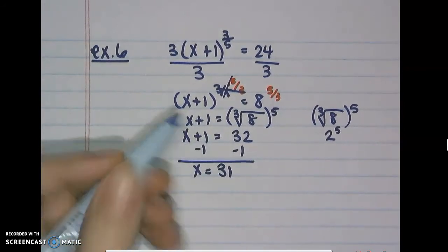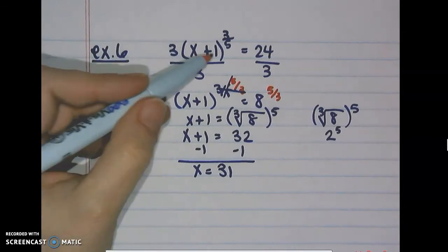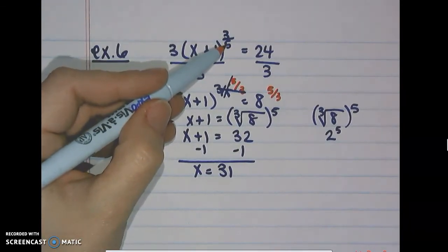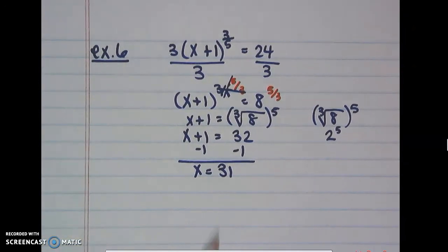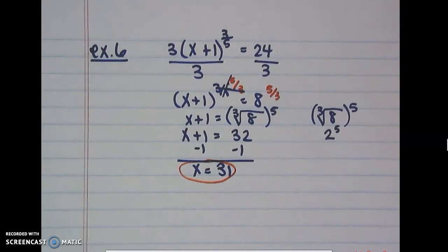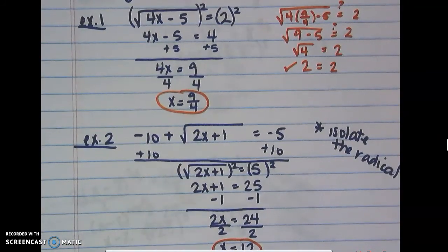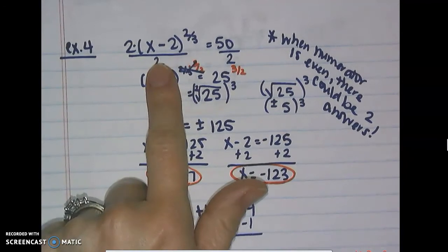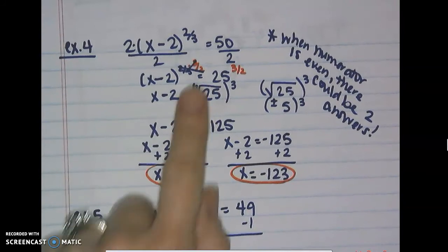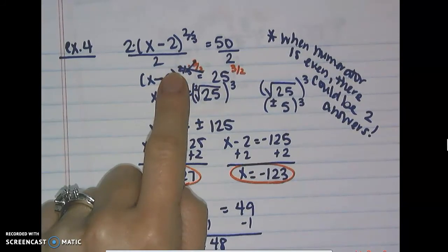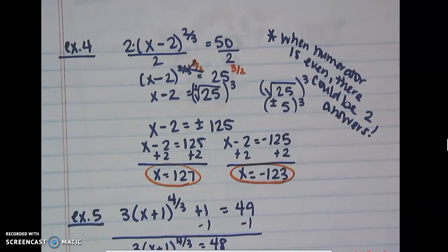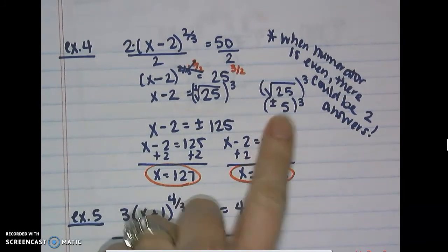The cube root of 8 is just positive 2 — no plus or minus needed here — so 2 to the fifth power is 32. Thus x plus 1 equals 32, and x equals 31. Checking: 31 plus 1 is 32, the fifth root of 32 is 2, 2 cubed is 8, and 8 times 3 is 24. To summarize: isolate the radical or parenthetical expression, take both sides to the reciprocal power, and check your answers. If the numerator of the original exponent is even, expect two answers with ±.